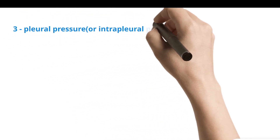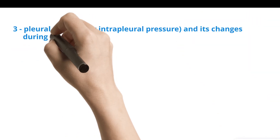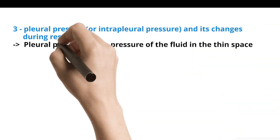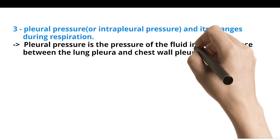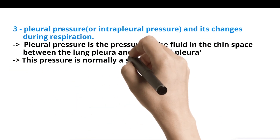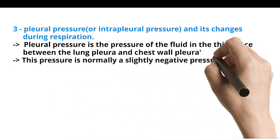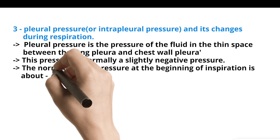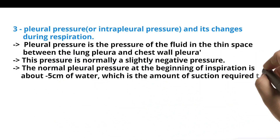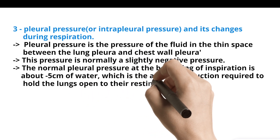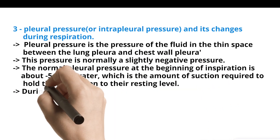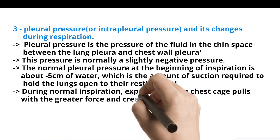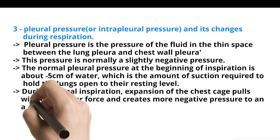3. Pleural pressure is the pressure of the fluid in the thin space between the lung pleura and chest wall pleura. This pressure is normally slightly negative. The normal pleural pressure at the beginning of inspiration is about minus five centimeter of water, which is the amount of suction required to hold the lungs open to their resting level. During normal inspiration, expansion of the chest cage pulls with greater force and creates more negative pressure, to an average of about minus 7.5 centimeter H2O.